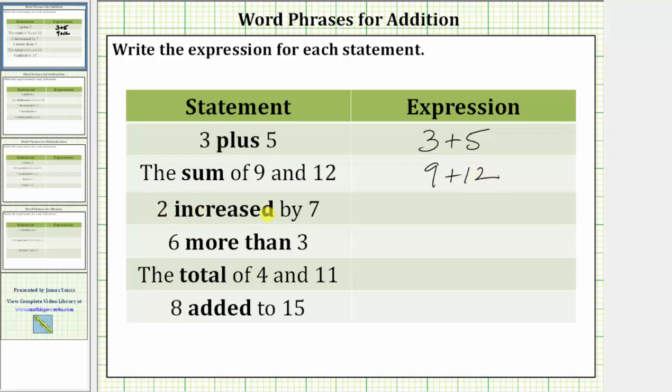Next we have two increased by seven. To increase a number by seven, we need to add seven. Two increased by seven is the expression two plus seven. Again, we begin with two, and then if we add seven, we are increasing two by seven.